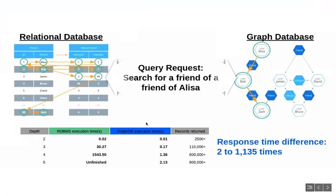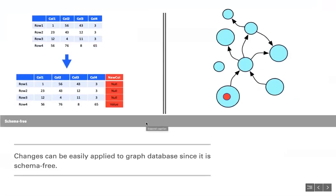Another major advantage of graph databases is that they are schema-free. Any changes can be easily applied since no schema modification is needed. In relational databases, adding a new attribute requires adding a new column and modifying the table structure, which is time-consuming. In graph databases, you can simply add properties to the existing vertex without any structural modification, saving time and effort.